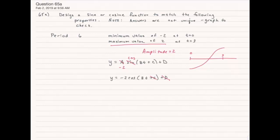So now the only thing left to do is find b. This is the way I find b. Normally b times t, I set it equal to what the normal period of a sine or cosine function is, in this case 2 pi.